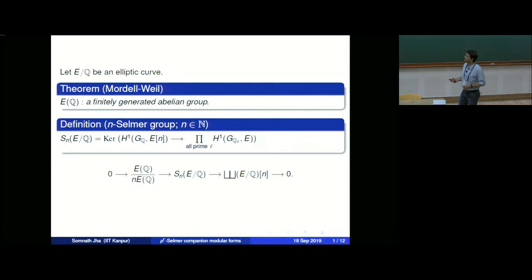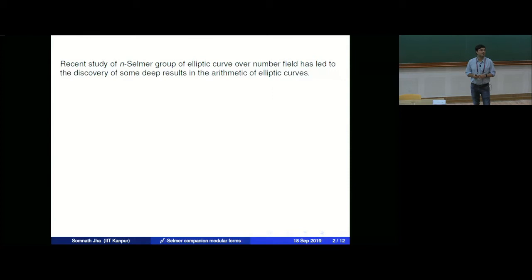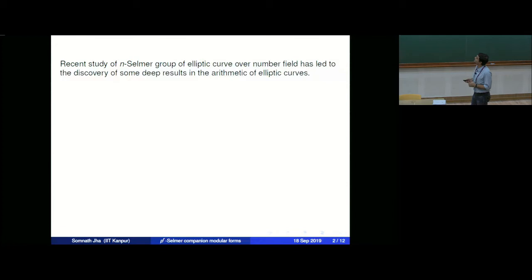If I take n to be a prime p, then the F_p-rank of the p-Selmer group will be an upper bound on the Z-rank of E(Q), because E(Q) is a finitely generated abelian group. There has been a lot of interest in the study of the n-Selmer group of late, and that study has led to the discovery of some of the deepest results in the arithmetic of elliptic curves.